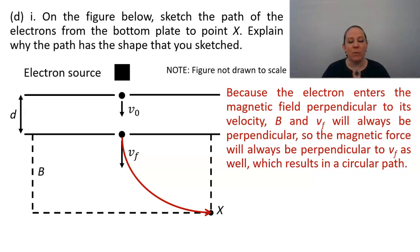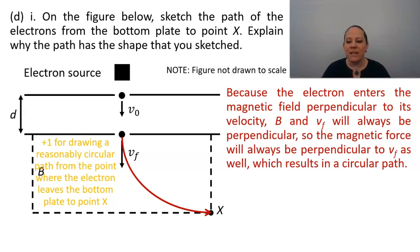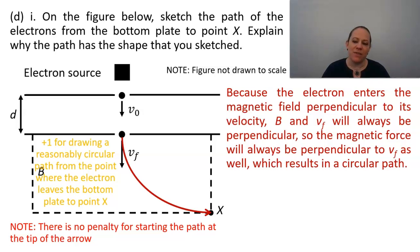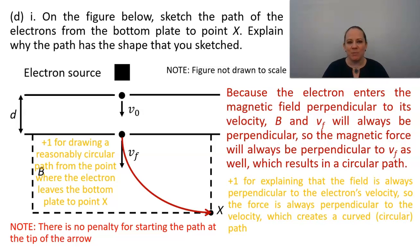And for scoring, we had two points. The first is for drawing a reasonably circular path from the point where the electron leaves the bottom plate to point X. Note that the diagram on the actual exam was a little bit more square than what I reproduced here. And also note, there's no penalty for starting the path at the tip of the arrow. Then our second point is for explaining that the field is always perpendicular to the electron's velocity. So the force is always perpendicular to the velocity, which creates a curved or circular path.